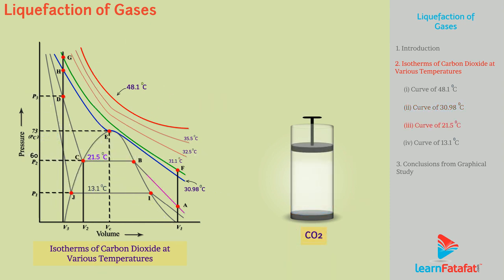At 21.5 degree Celsius, gaseous carbon dioxide exists up to point B. At point B, that is 60 atmospheric pressure, liquefaction of carbon dioxide starts. It continues till point C, where liquefaction is complete and gas is fully condensed.